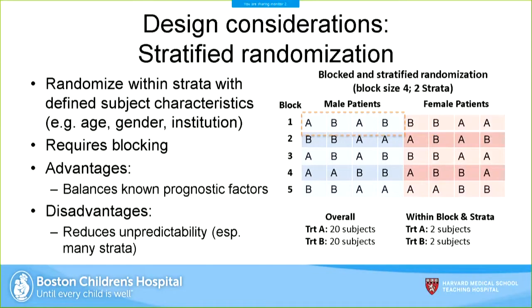Stratified randomization randomizes within strata defined by subject characteristics such as age, gender, or in a multi-center study the institution the patient is in. Usually stratified randomization also includes blocking — making it blocked and stratified randomization. In an example with strata of male and female patients, within each block of four there are equal numbers of treatments, resulting in equal numbers of male and female patients at the end of the analysis. The advantage is balancing these potentially prognostic factors, but it will again reduce unpredictability.